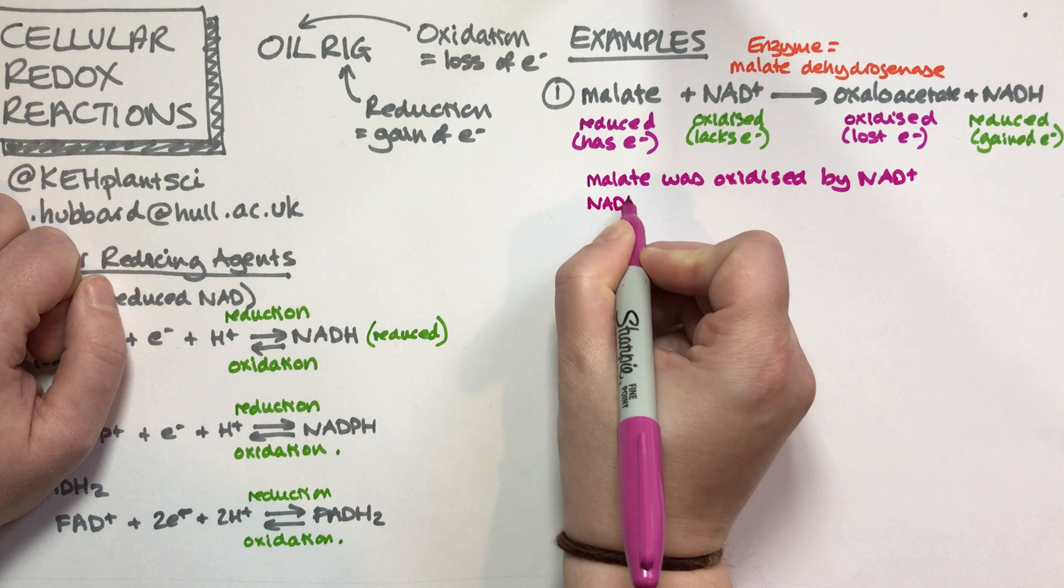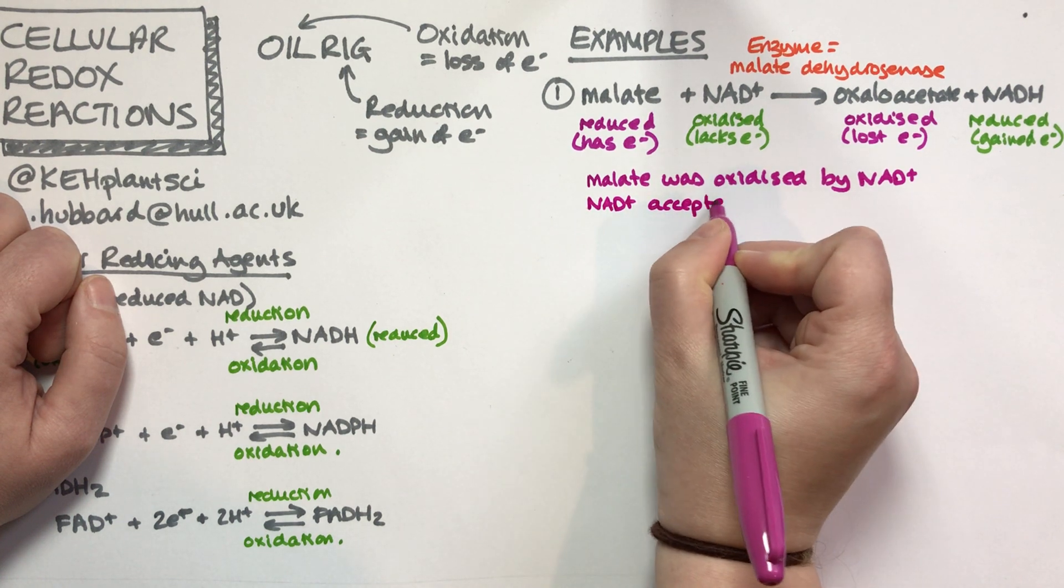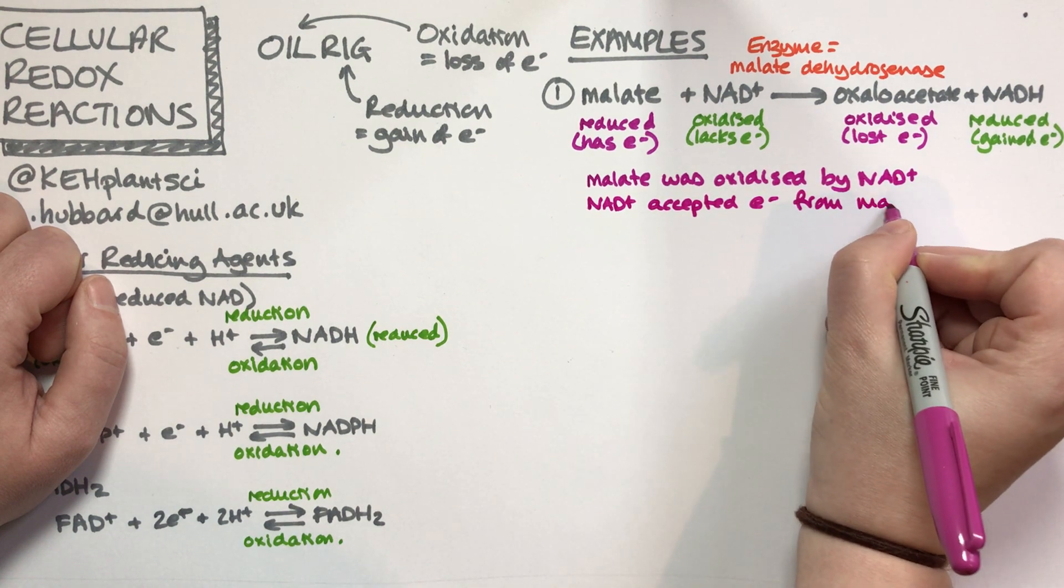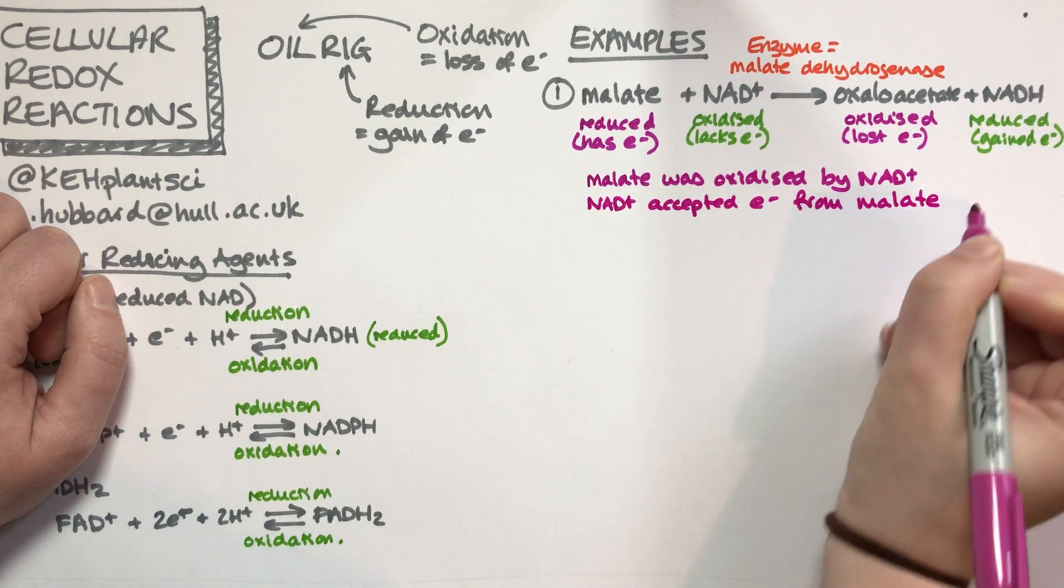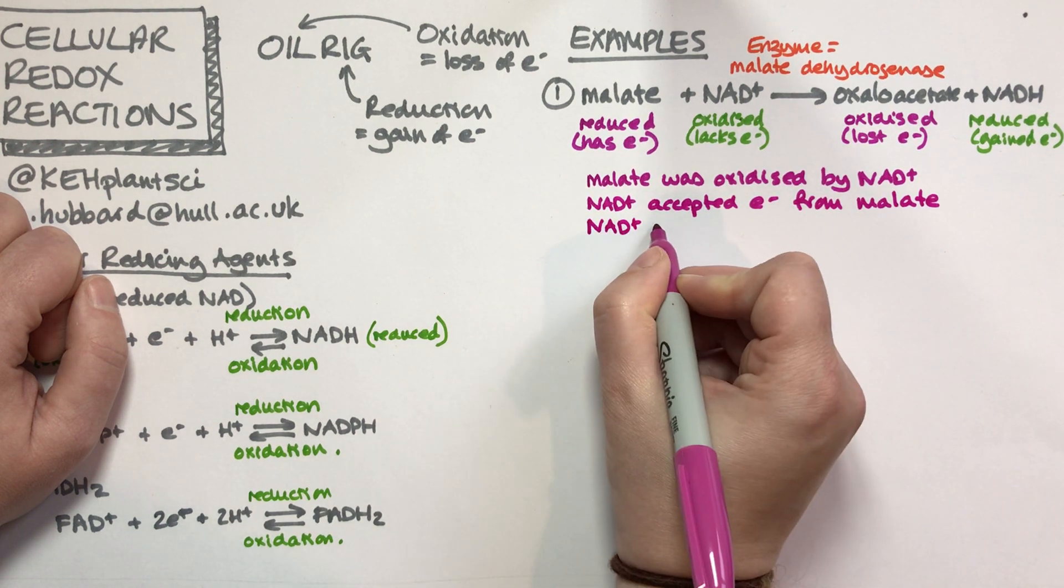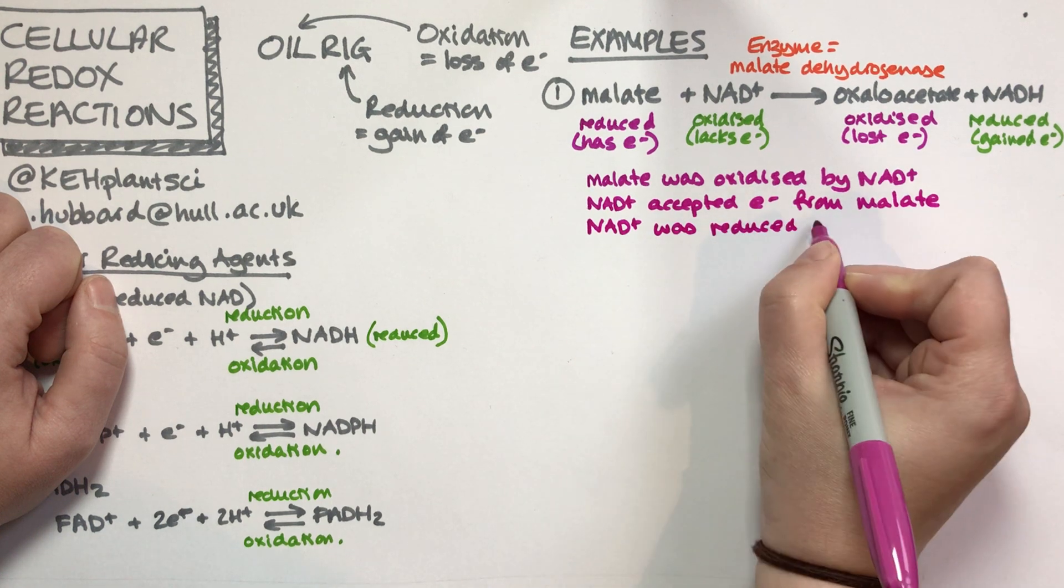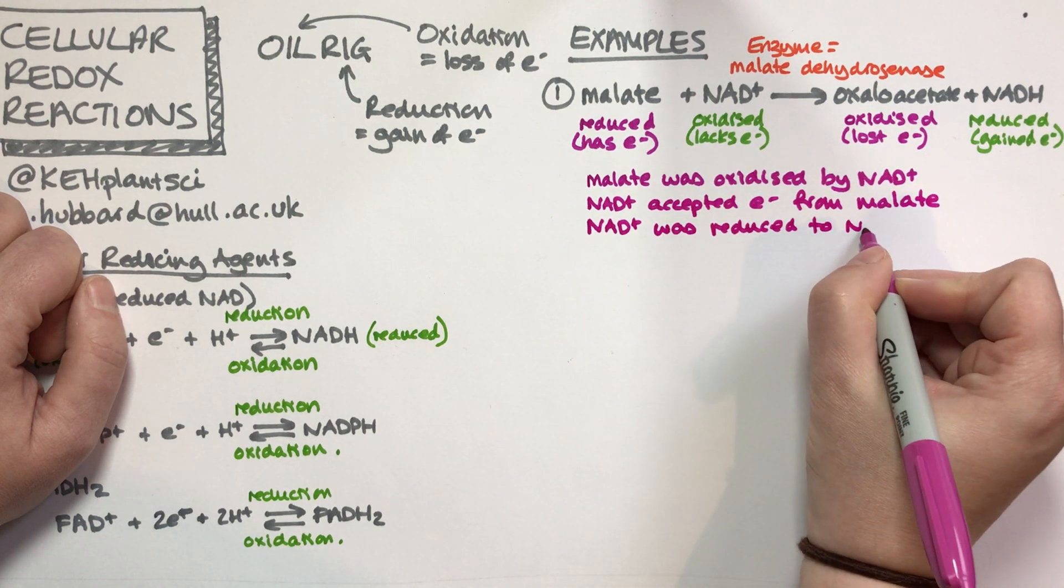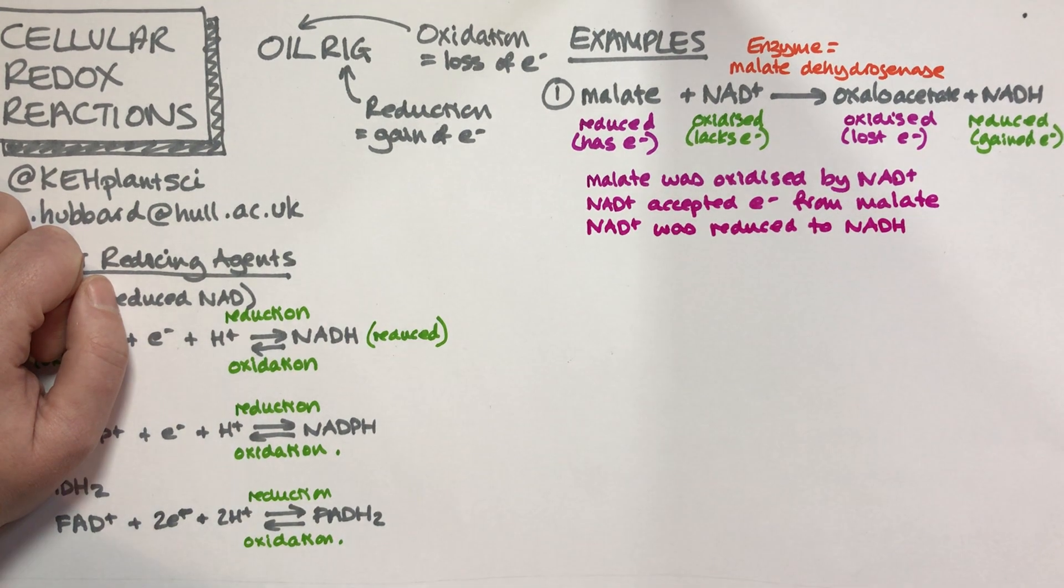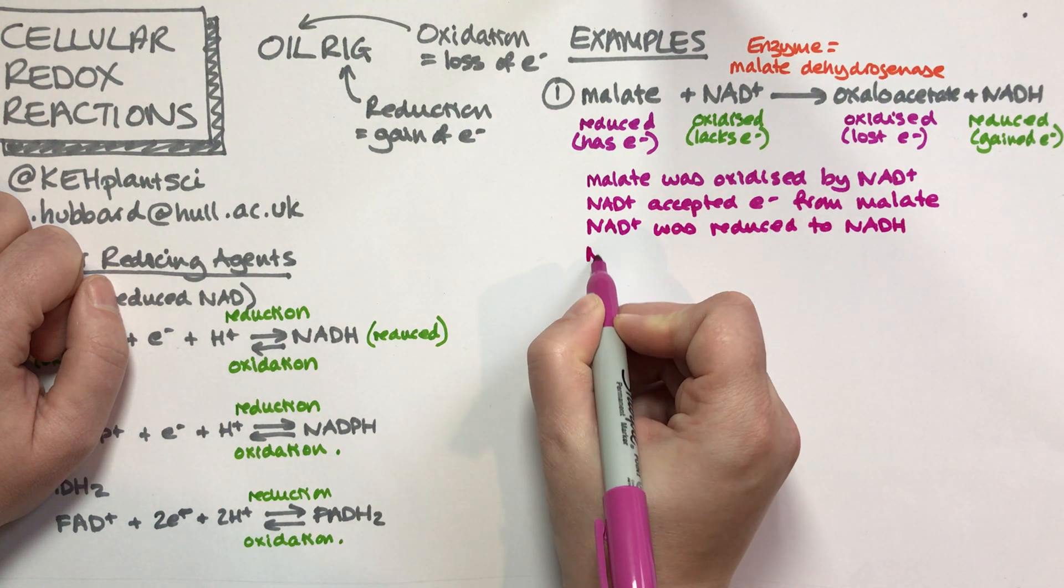We can also say that NAD+ accepted electrons from malate. NAD+ was reduced to NADH.